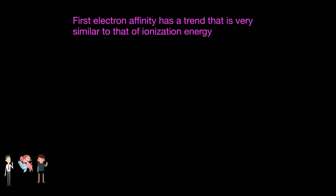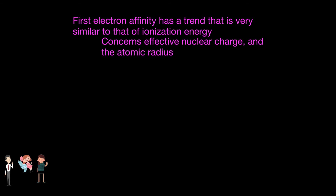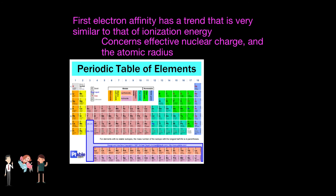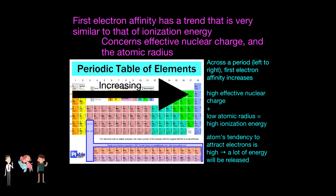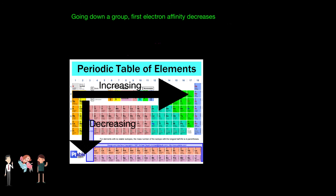Furthermore, first electron affinity has a trend very similar to that of ionization energy, as it also has to do with effective nuclear charge and atomic radius. Going across a period from left to right, electron affinity increases. This is because of the high effective nuclear charge and low atomic radius, which equate to high ionization energies. These two factors contribute to an atom's tendency to attract electrons, and so if this tendency is high, a lot of energy will be released. In going down a group, first electron affinity decreases, due to decreasing effective nuclear charge, increasing atomic radius, and increased shielding. These factors decrease an atom's tendency to attract electrons, and therefore little energy will be released.